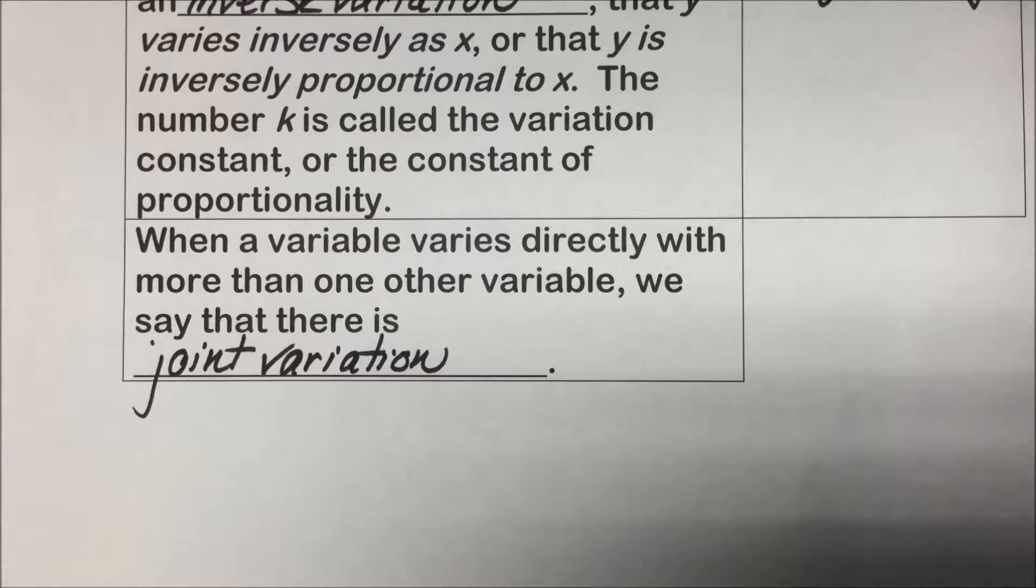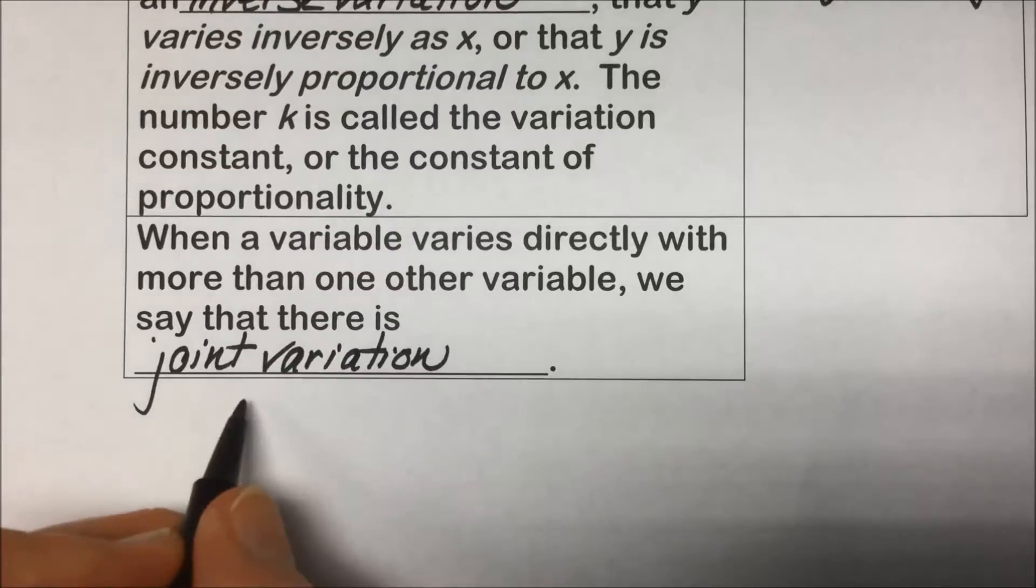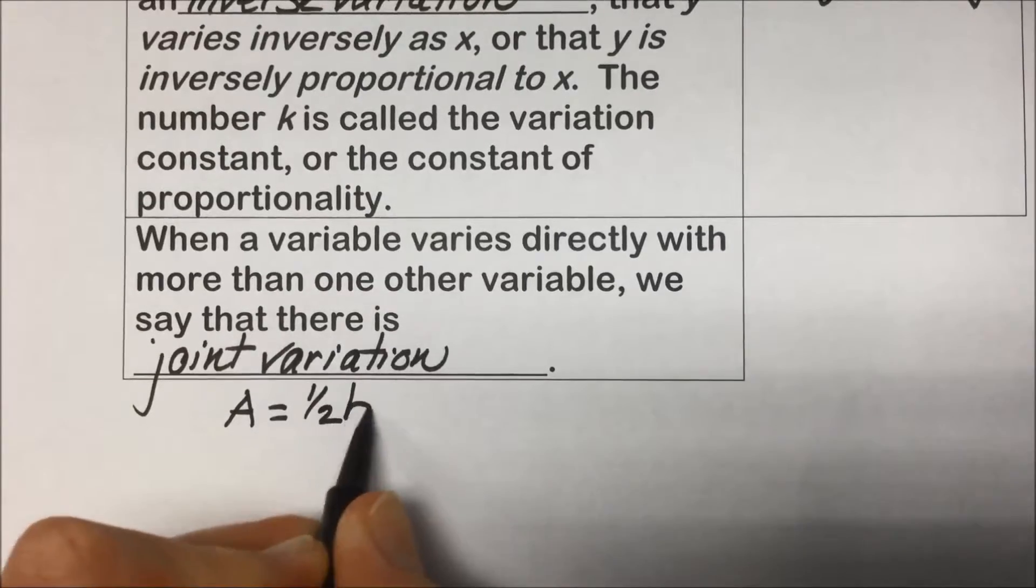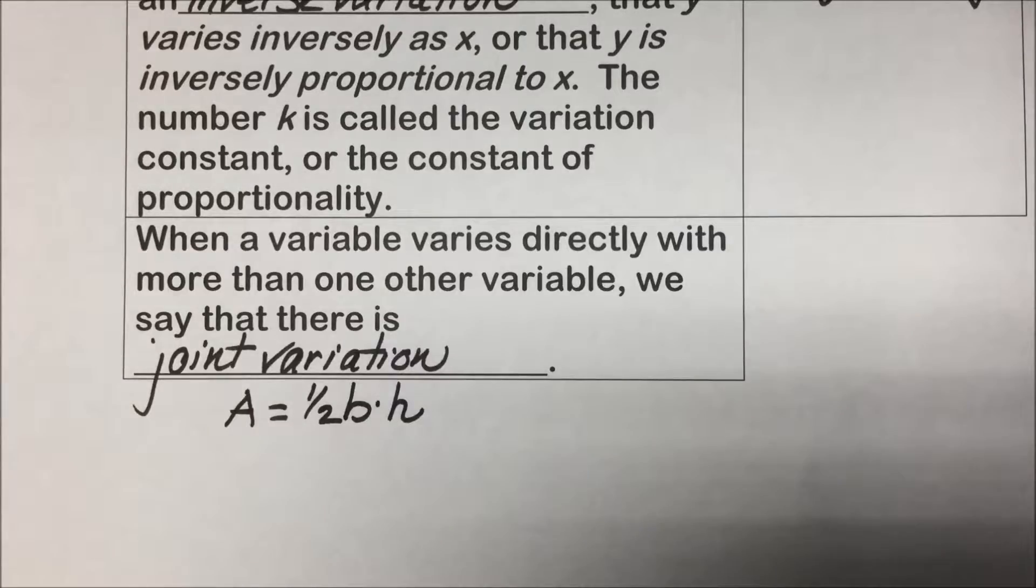We know or perhaps remind ourselves that the formula for the area of a triangle is A is equal to one-half base times height. And this is where we have the joint variation.